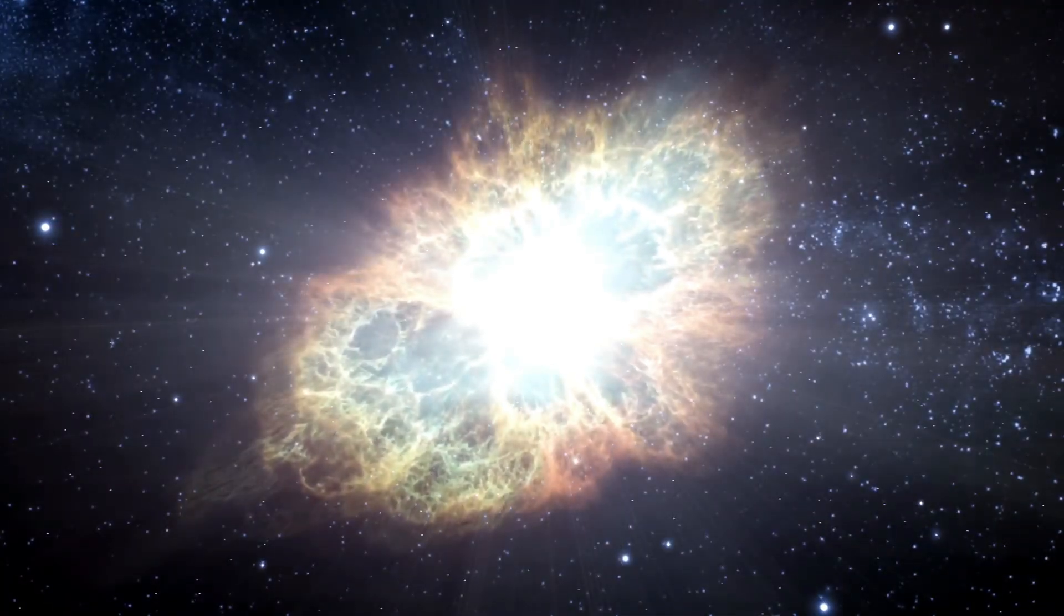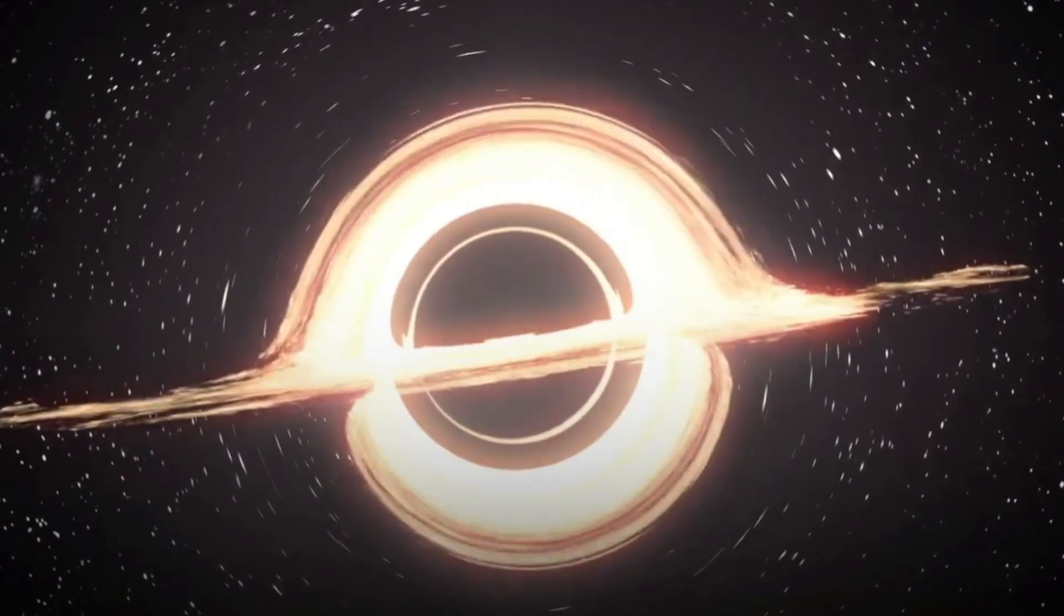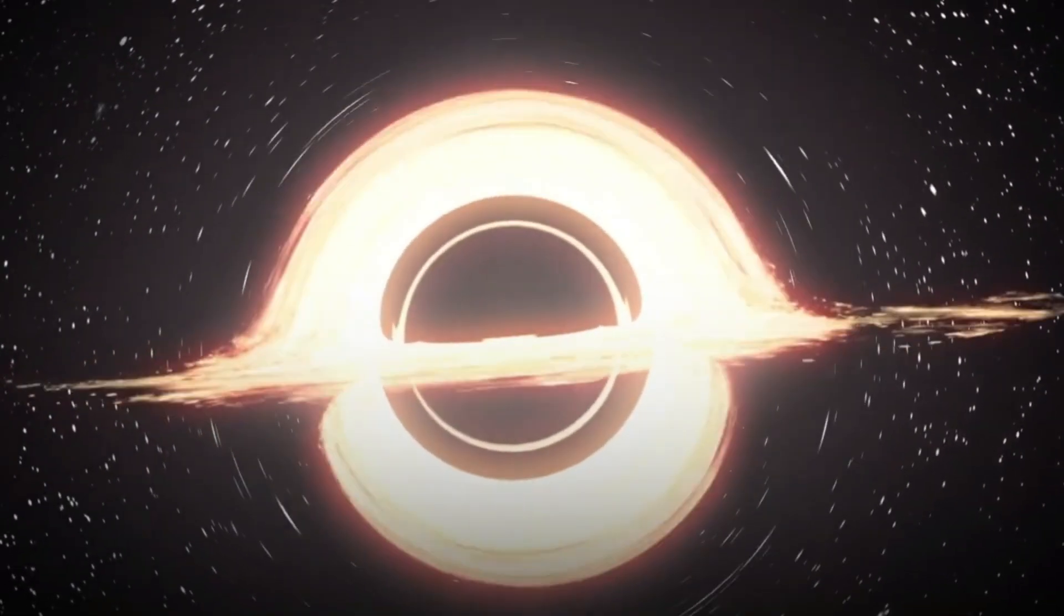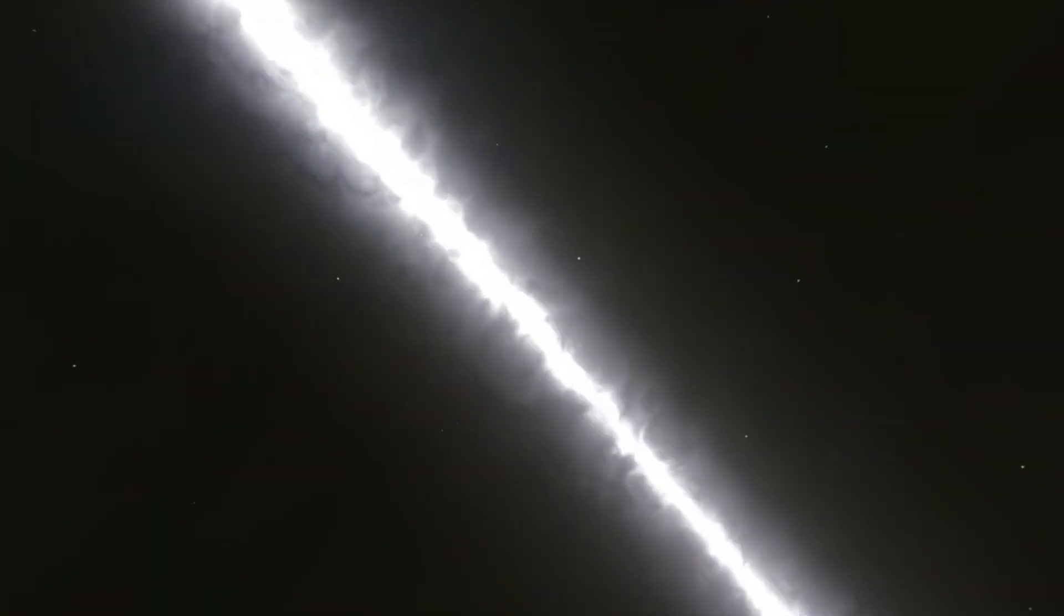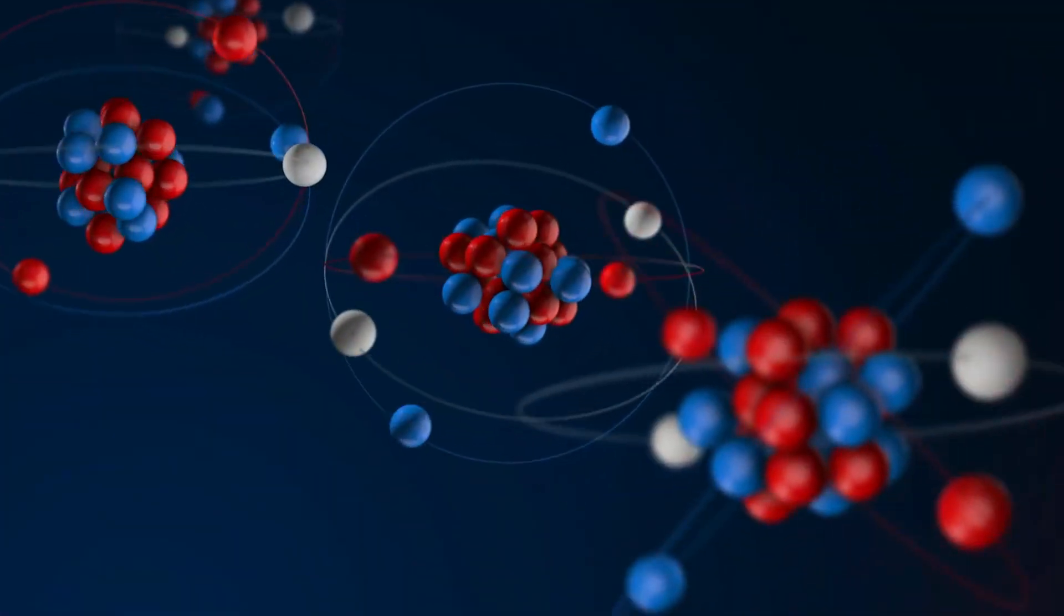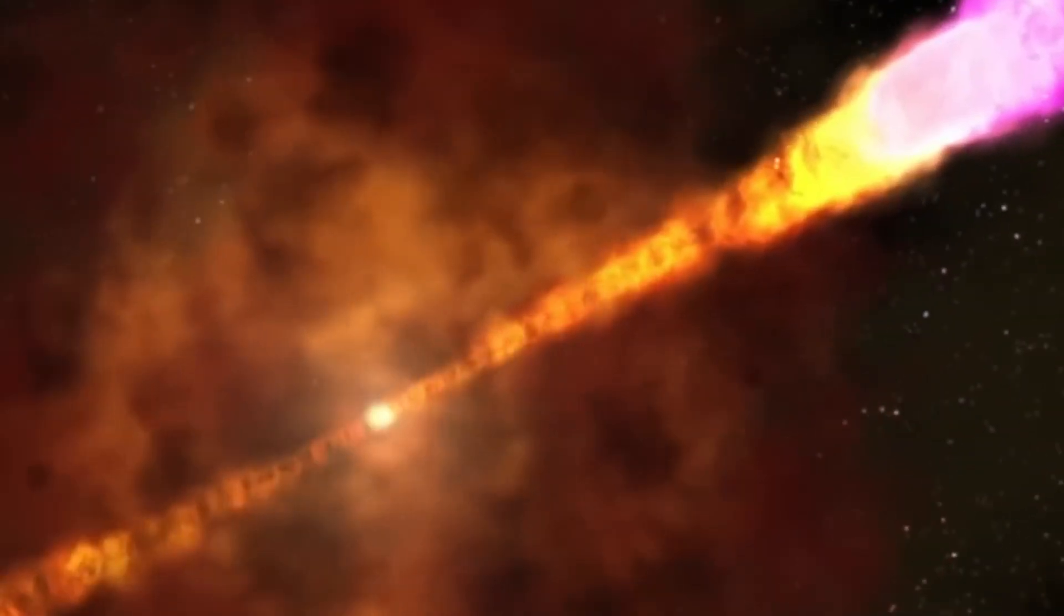These particles are often the product of violent cosmic events like supernovae, black hole activity, and gamma ray bursts. When a cosmic event occurs, it can unleash a burst of high-energy radiation, accelerating particles in the process. Within the Fermi and Erosita bubbles, these cosmic rays interact with the gas and dust that make up the surrounding medium.